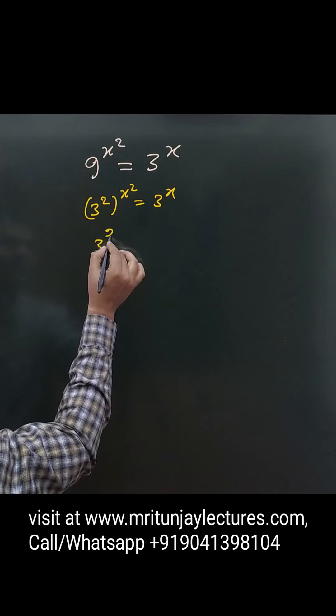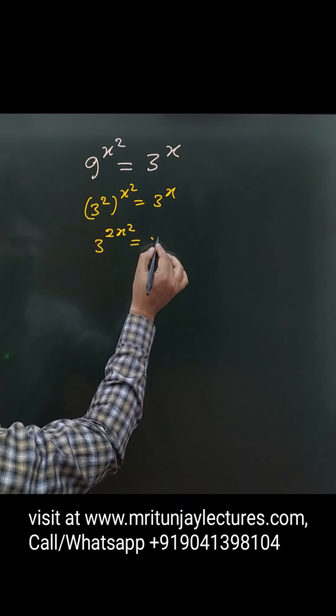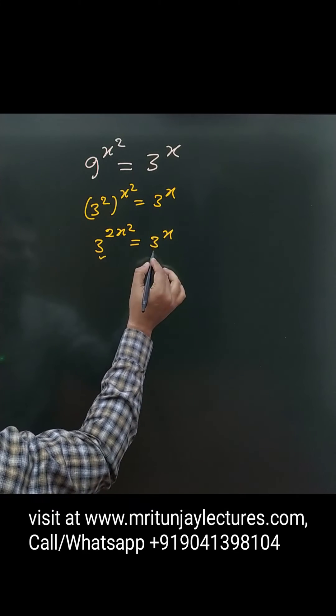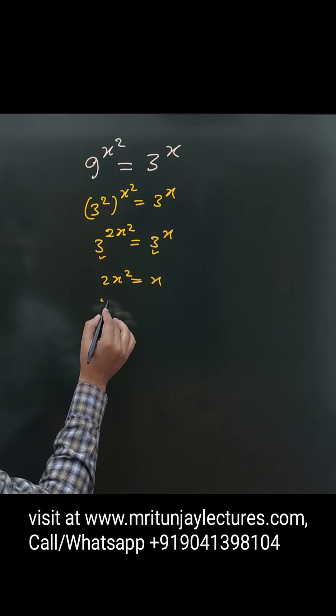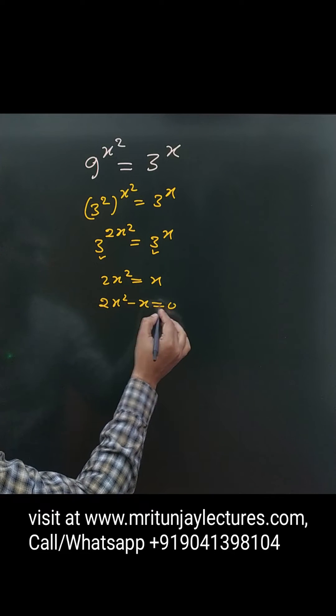Okay. After that, 3 to the power 2x squared will be equal to 3 to the power x. Now, the bases are the same, so 2x squared equals x. So, 2x squared minus x will be equal to 0.